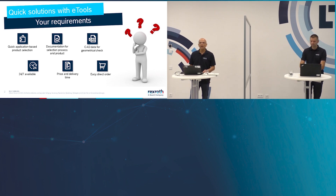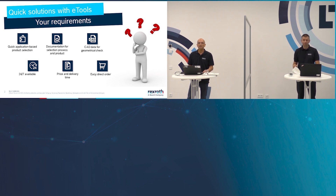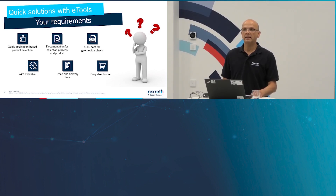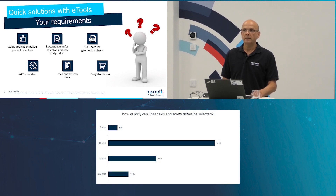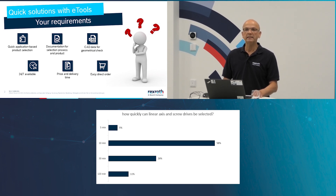What is your time estimation? How long does the whole process take for linear guides and screw assemblies? Does it take 5 minutes, 10 minutes, 30 minutes, or 120 minutes? Please answer in the chat. Now we have the answers — most of you estimate it takes 10 minutes or more. Now we will show you how easy and how fast it works with the eTools of Bosch Rexroth.